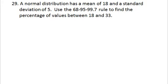Remember what these things mean. The 68-95-99.7% rule helps you remember what percent of the area is within 1, 2, or 3 standard deviations of the mean for a normal distribution. 68 corresponds to 1 standard deviation, 95 corresponds to 2 standard deviations, and 99.7 corresponds to 3 standard deviations.